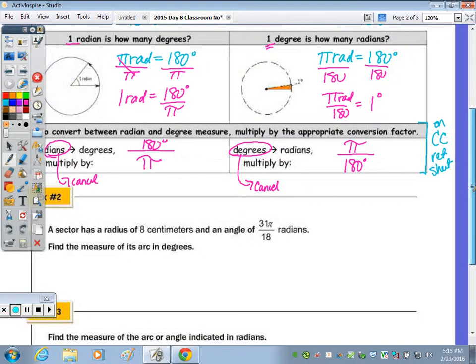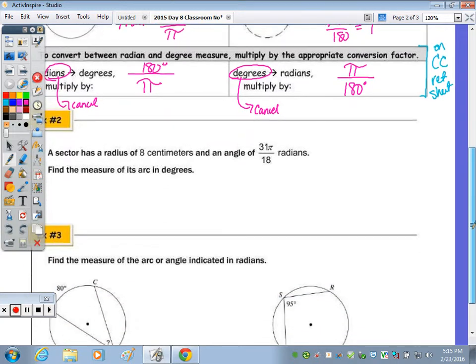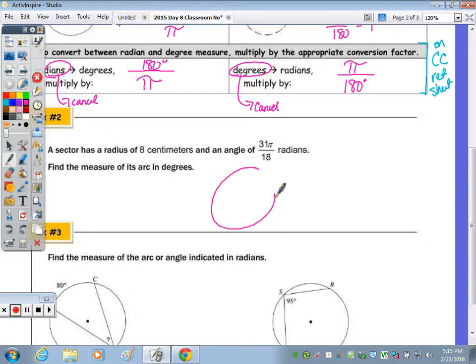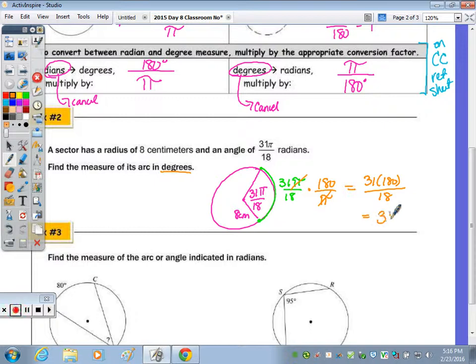So let's look at example number two. We have a sector, it doesn't need to be drawn to scale, a sector of a circle. Radius of 8 centimeters. The angle in radians is 31 pi over 18. Find the measure of the arc in terms of degrees. Well, in terms of a radian measure, this arc is also 31 pi over 18, as a central angle is congruent to the arc that it intercepts. So to change this now to degrees, I want to get rid of the radians or the pi. So I multiply by 180 over pi. Pi's cancel, and we're left with 31 times 180 over 18, which is 310 degrees.